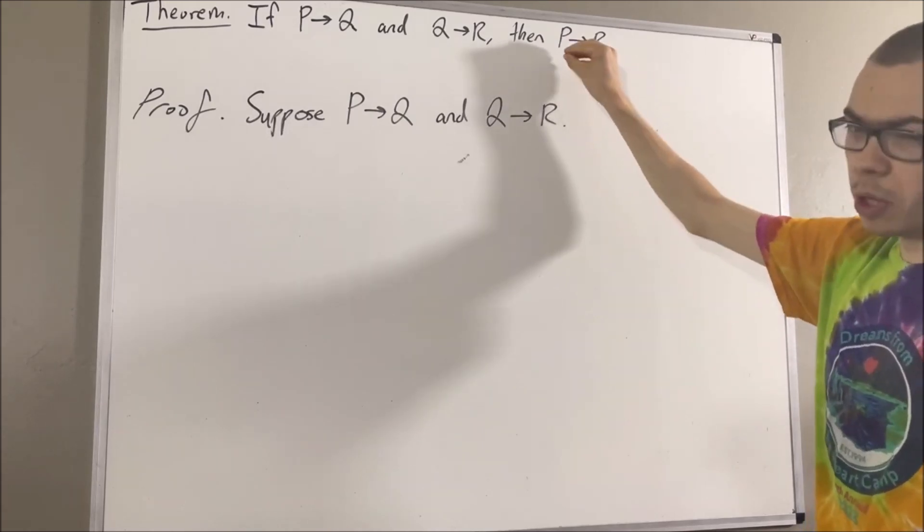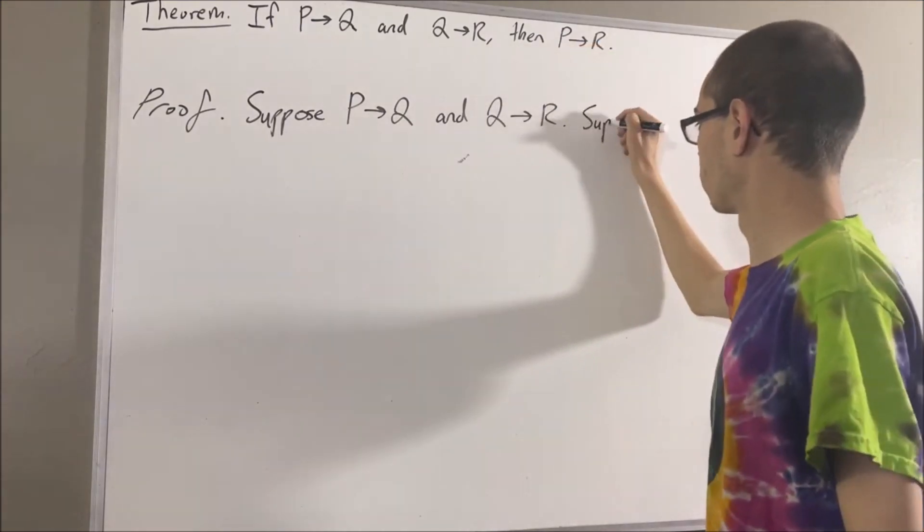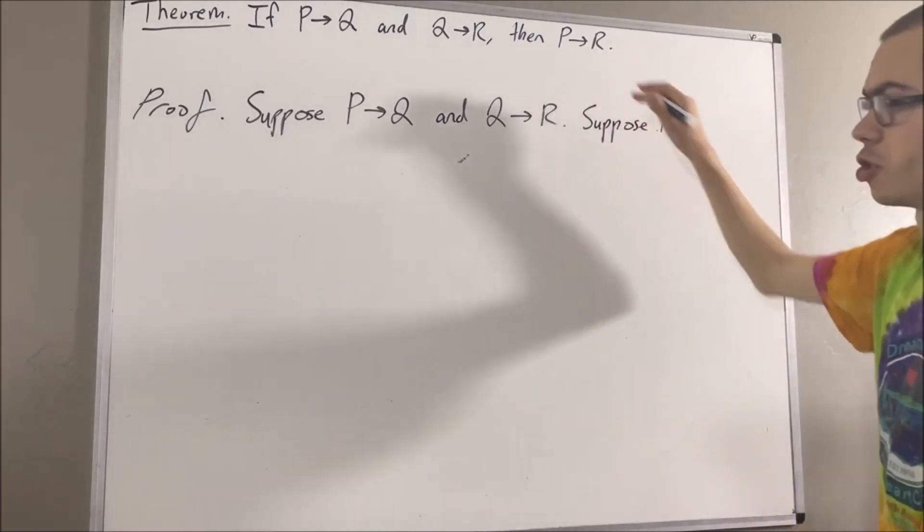So let's suppose that P is true now. From here, we want to then show that R is true.